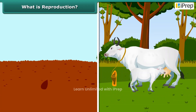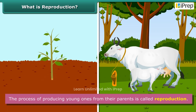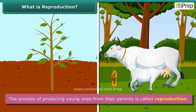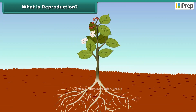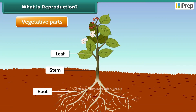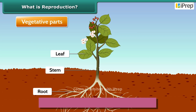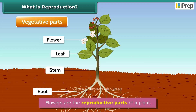What is reproduction? The process of producing young ones from their parents is called reproduction. Most plants have roots, stems, and leaves — these are called the vegetative parts of a plant. Flowers are the reproductive parts of a plant.